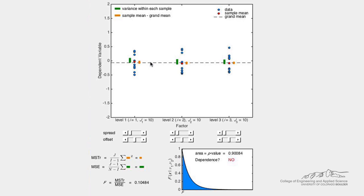Now let's calculate the variance within each experiment, shown visually with the green bars. And let's calculate the difference between each sample mean and the grand mean, shown visually with the orange bars.